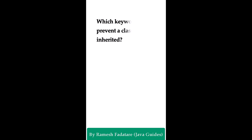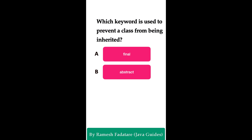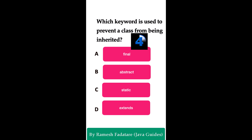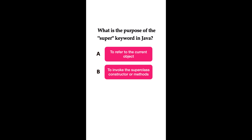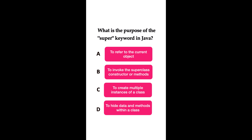Which keyword is used to prevent a class from being inherited? Option A: final keyword. Option B: abstract keyword. Option C: static keyword. Option D: extends keyword. The correct answer is the final keyword. When you create a class with the final keyword, that class cannot be subclassed or extended, preventing it from being inherited. What is the purpose of the super keyword in Java? Option B: to invoke the superclass constructor or methods. The super keyword refers to the superclass of the current object and is used to invoke the superclass constructor or methods within a subclass.